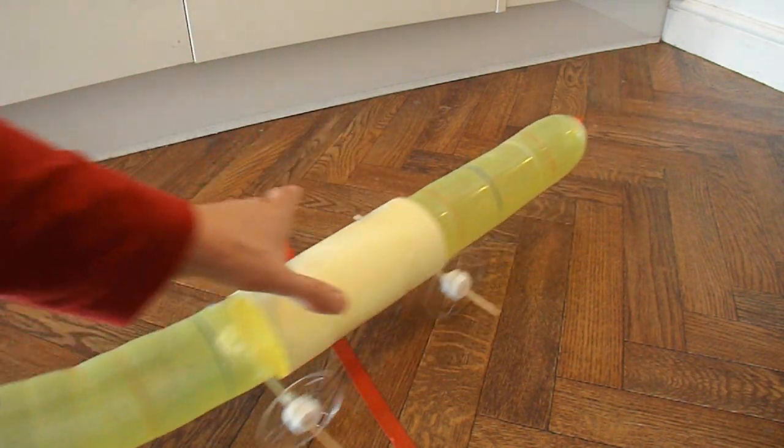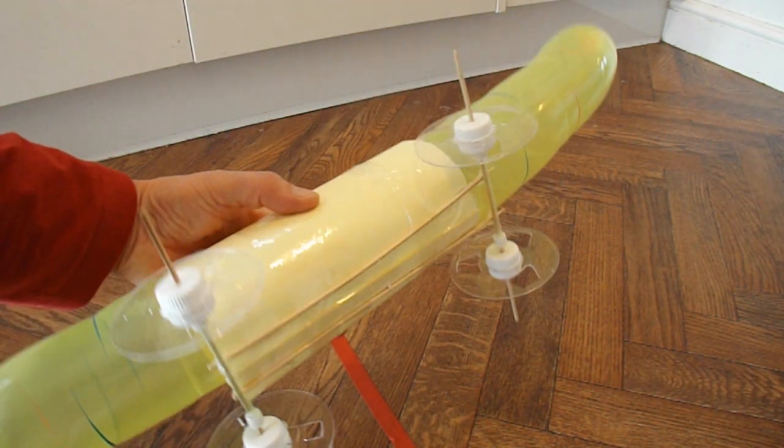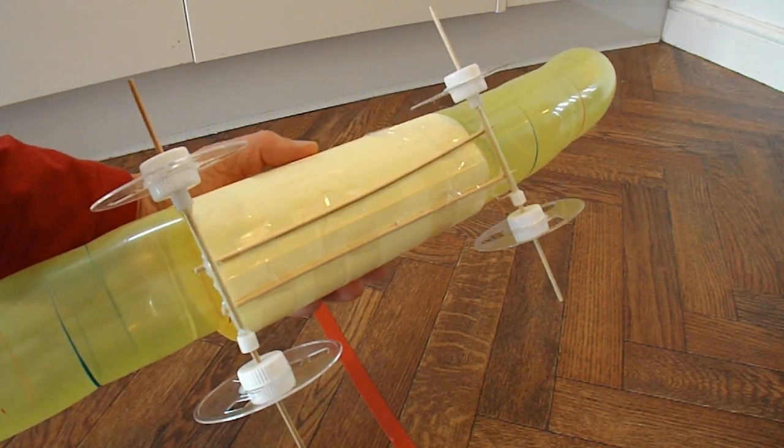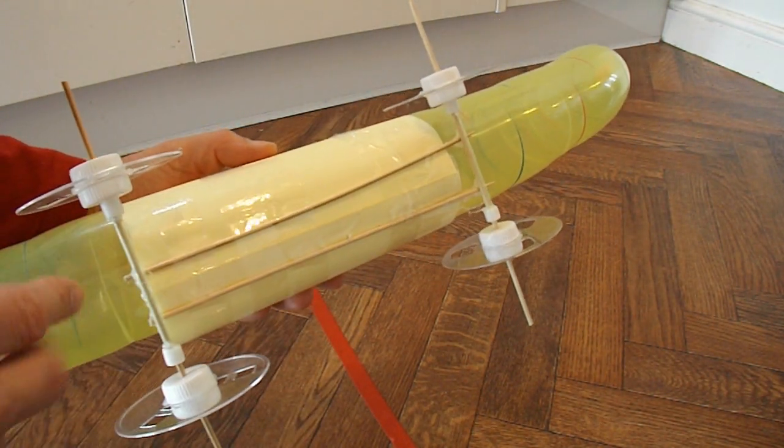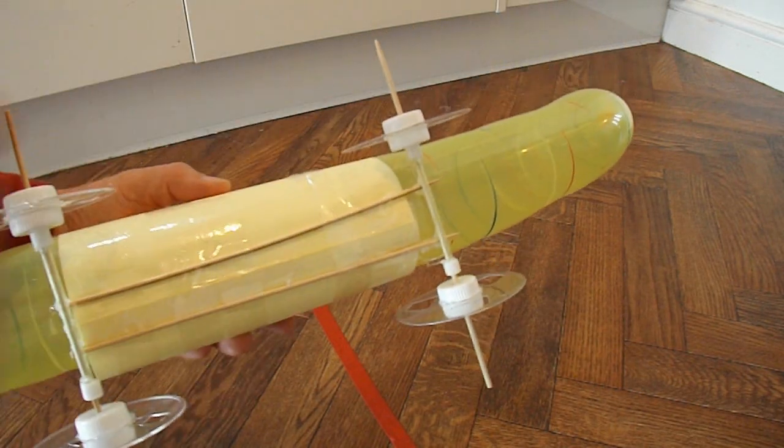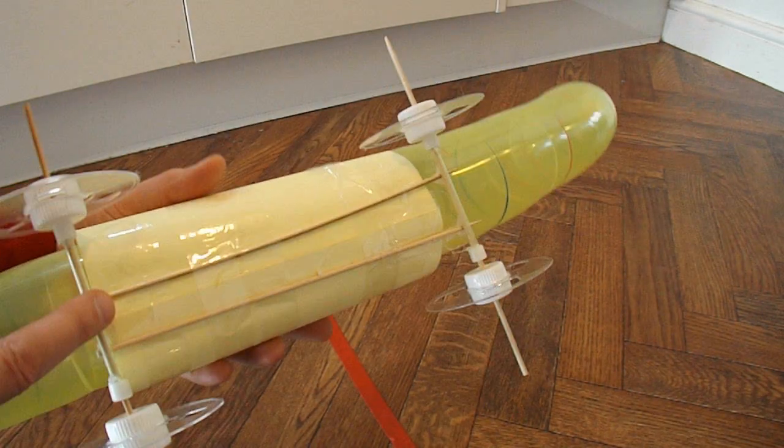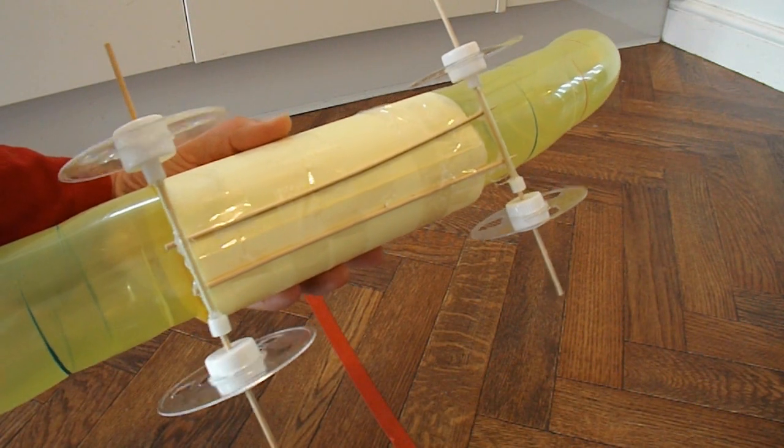The car itself is just four barbecue skewers. Two go front to back and two for the axles. Drinking straws for the axles to run in.